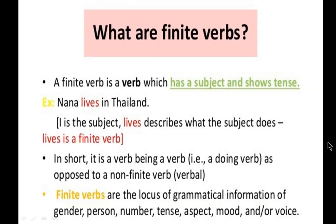First we will talk about what are finite verbs. A finite verb is a verb which has a subject and it shows the tense — that means it changes its form in order to indicate a change in tense. For example: Sam writes the poetry, Sam wrote a poem, and Sam will write two more poems. In the slide we can see the example: Nana lives in Thailand. Here 'lives' is a finite verb describing what the subject is doing.